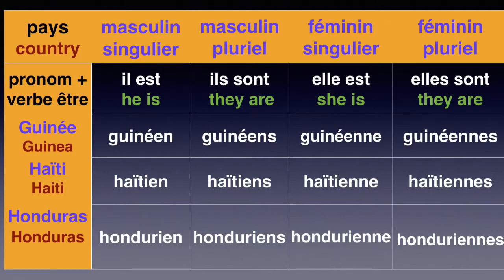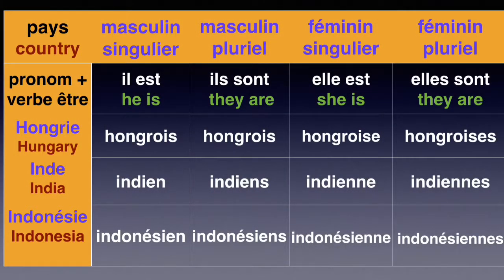Il est guinéen, he is Guinean. Elle est guinéenne, we add E, double N, E. Il est haïtien, he is Haitian. Elle est haïtienne, we add E, double N, E. Il est hondurien, he is Honduran. Elle est hondurienne, double N, E. Il est hongrois, he is Hungarian. Elle est hongroise, we add an E at the end to show it's feminine. Il est indien, he is Indian. Elle est indienne, double N, E. Il est indonésien, he is Indonesian. Elle est indonésienne, again double N, E to show it's feminine.